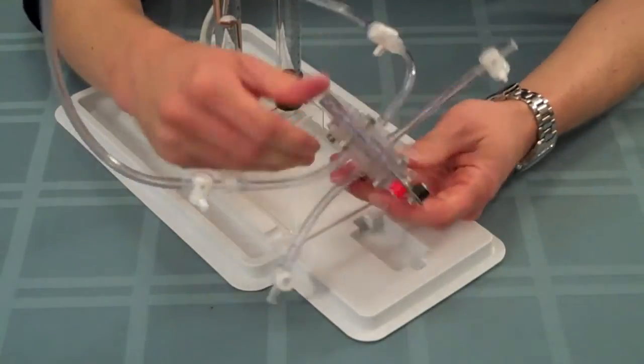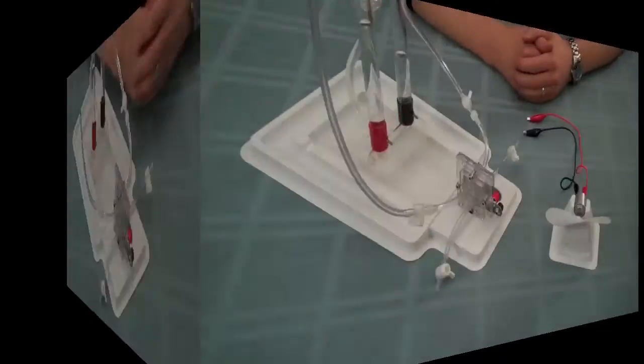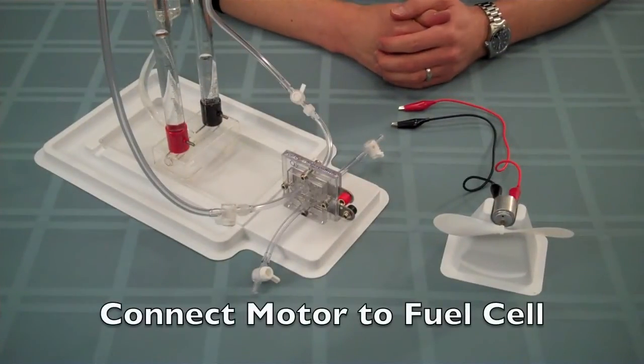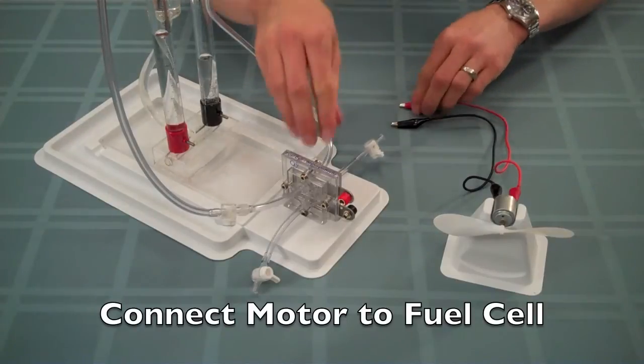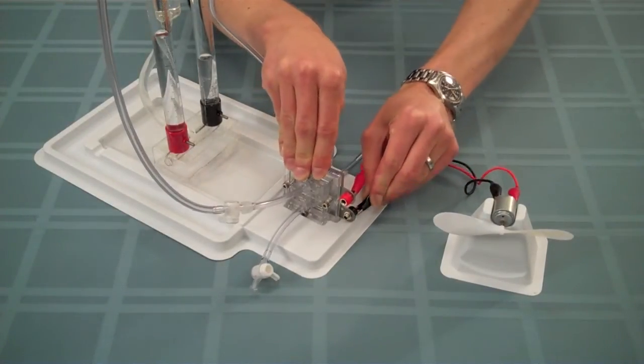Once all four tubes are connected to the fuel cell, go ahead and insert it into the white plastic tray to keep it snug. Go ahead and connect the electric motor to the fuel cell by connecting red to red and black to black.